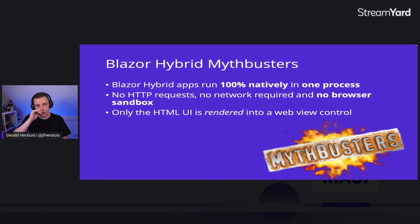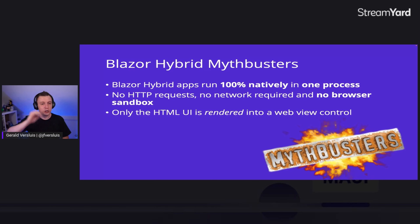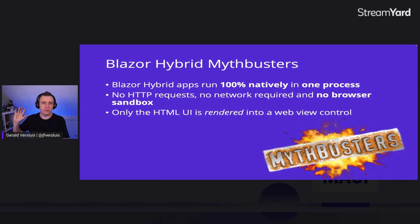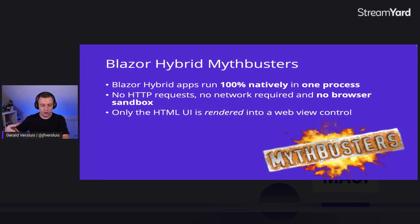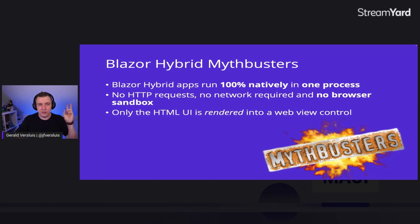If you have legacy applications running on WinForms or WPF, you need to upgrade to .NET 6, but then you can use the BlazorWebView and modernize your legacy application by swapping out some things for Blazor components and start transitioning to a newer, ultimately Blazor application. A key myth to bust: Blazor Hybrid runs 100% natively in one process — we're not spinning up a little web process or web server in the background. We already have a .NET application running on .NET, so we don't need to host it anywhere. No HTTP requests unless you're going out to a server to retrieve data, and there is no browser sandbox — you can access all device APIs and sensors.